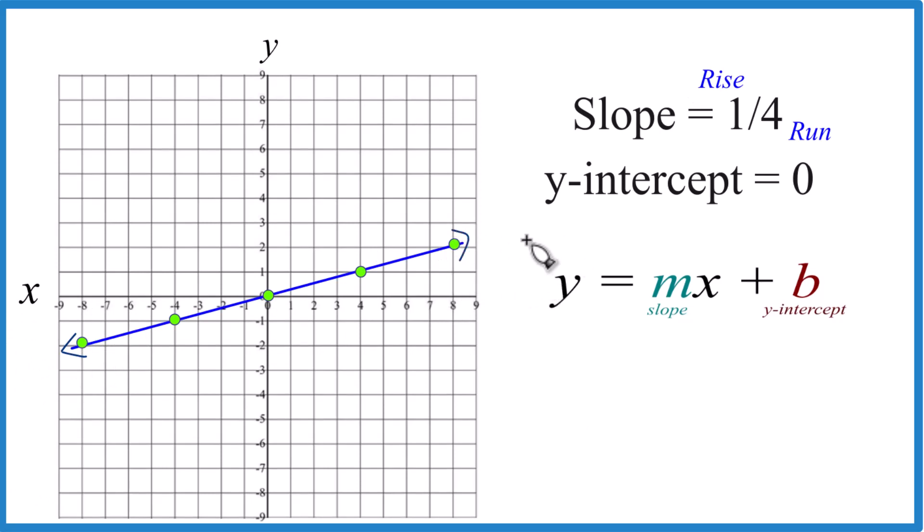And that is the graph for a slope of one-fourth and the y-intercept of zero. If you wanna write the equation, since the y-intercept here is zero, we just leave that off. M, that's the slope, that's one-fourth. And we'll put the x after it there. So y equals one-fourth x. That's the equation for the graph of the line we just drew here with slope one-fourth and y-intercept zero.